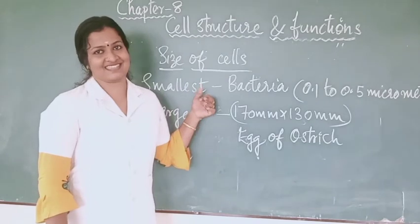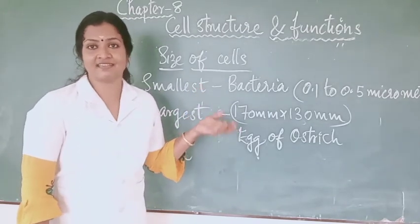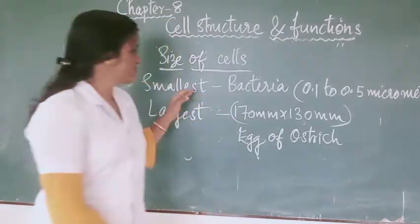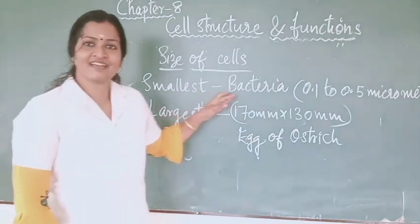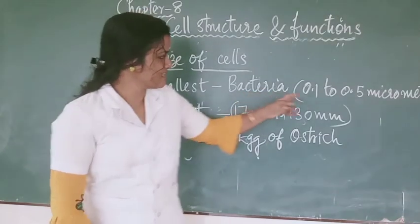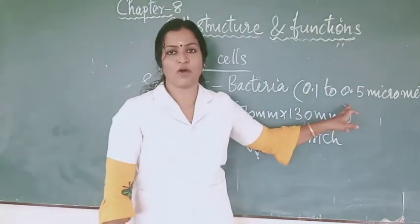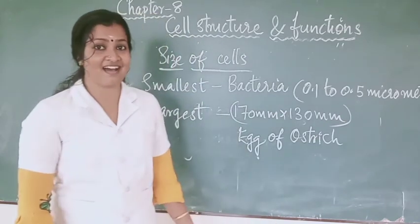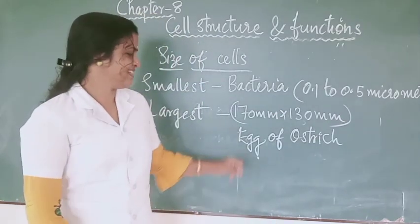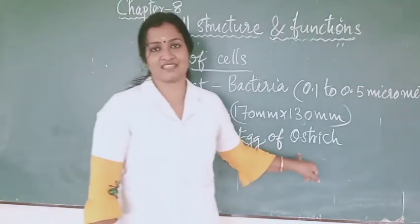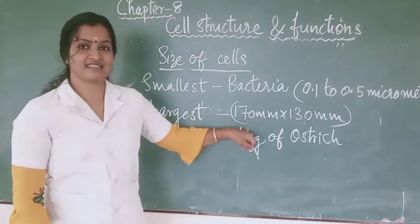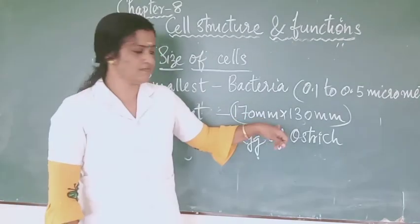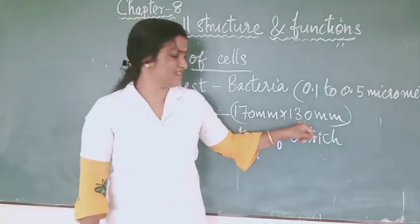Size of the cells: there are differences in the size of cells of living organisms. The smallest cell is a type of bacteria, with a size of 0.1 to 0.5 micrometers. The largest cell is the egg of an ostrich, and its size is 170 mm by 140 mm.